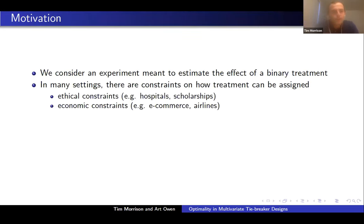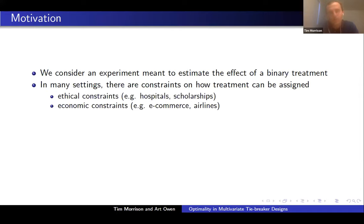Let's start with some motivation for our setting. We consider an experiment meant to estimate the effect of a binary treatment — a very fundamental problem. In many settings, there are constraints on how exactly you can assign this treatment. For example, these constraints might be ethical in nature — a hospital, or a university assigning a scholarship or financial aid. But it could also be economic constraints: a business might want to estimate some treatment effect but doesn't want to haphazardly assign treatment; they want to ensure some measure of profit or outcome of interest.